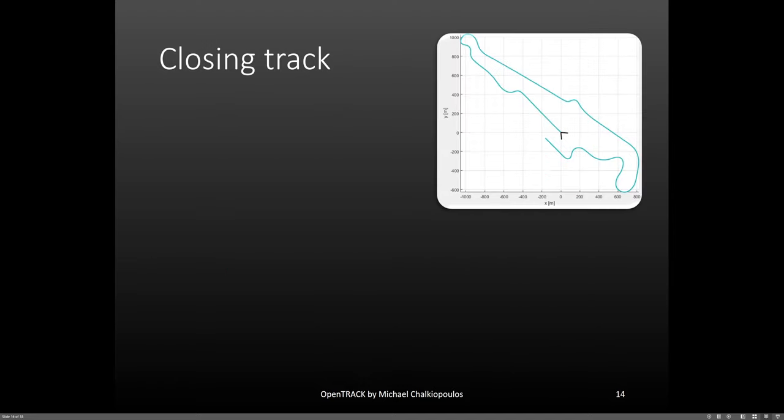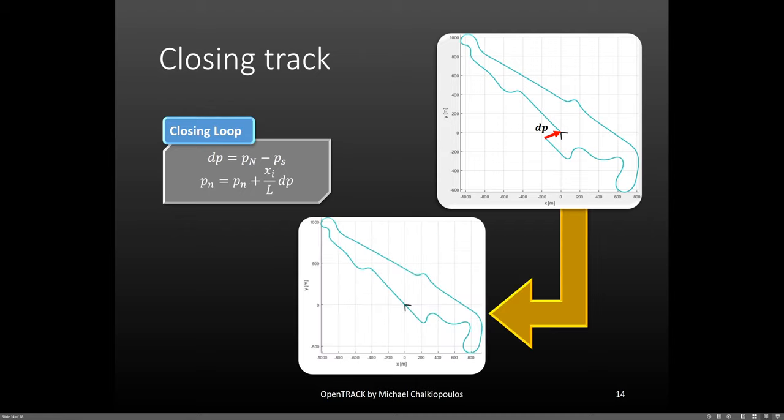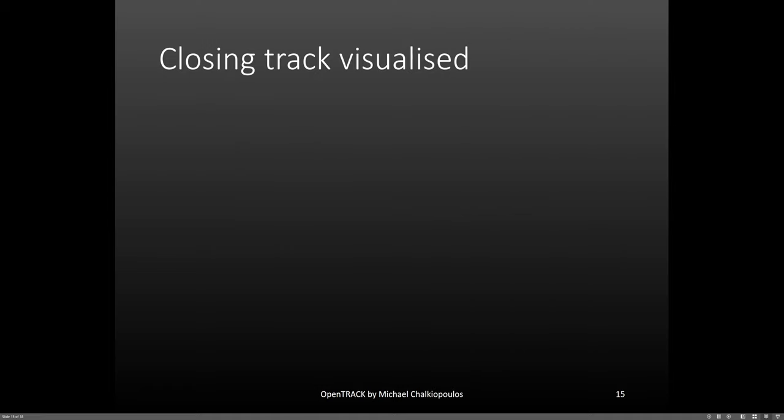Stage two is where we actually close the track. First, we calculate the position error DP. Then, we linearly adjust the position for all the points, just like before. This gives us the final result with the correct map for Polary card. To help you visualize what happens, let's watch this animation.